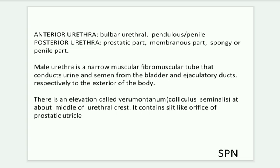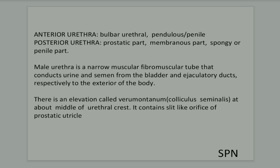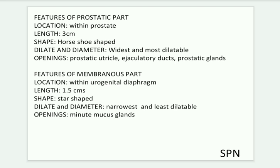The verumontanum is located at about the middle of the urethral crest and contains a slit-like orifice of the prostatic utricle. Features of the prostatic part: its location is within the prostate, its length is three centimeters, its shape is horseshoe-shaped when dilated, and its diameter is the widest and most dilatable.